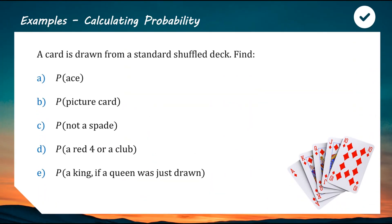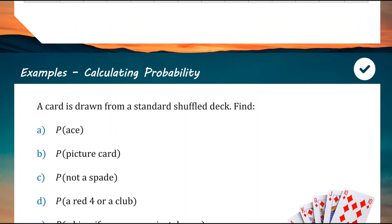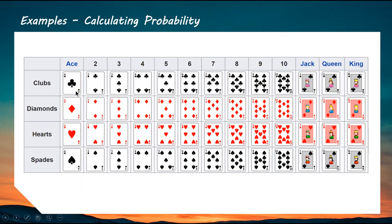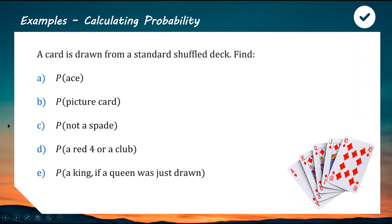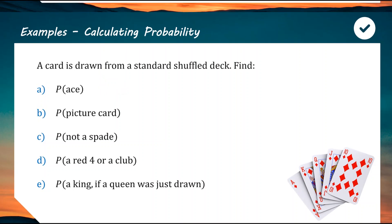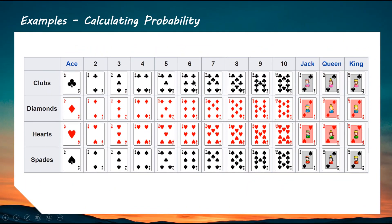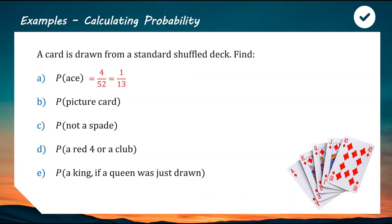For the probability of an ace: the ace is one of the 13 card values and there's one in every suit, so out of 52 cards there are four aces. We can write the probability as 4 out of 52. Alternatively, in each suit there are 13 card values and ace is one of them, so 1 out of 13 — both are correct as equivalent fractions, but the simplified form is preferred.